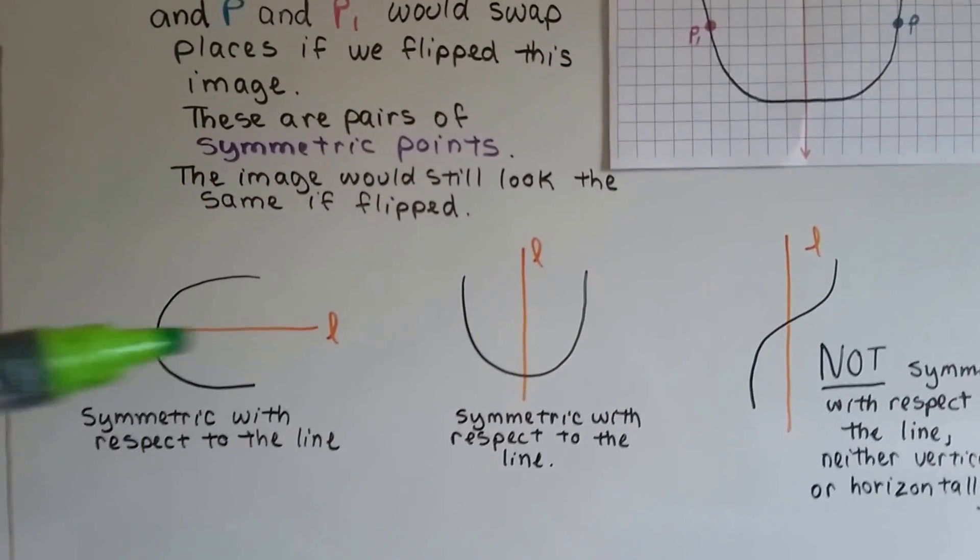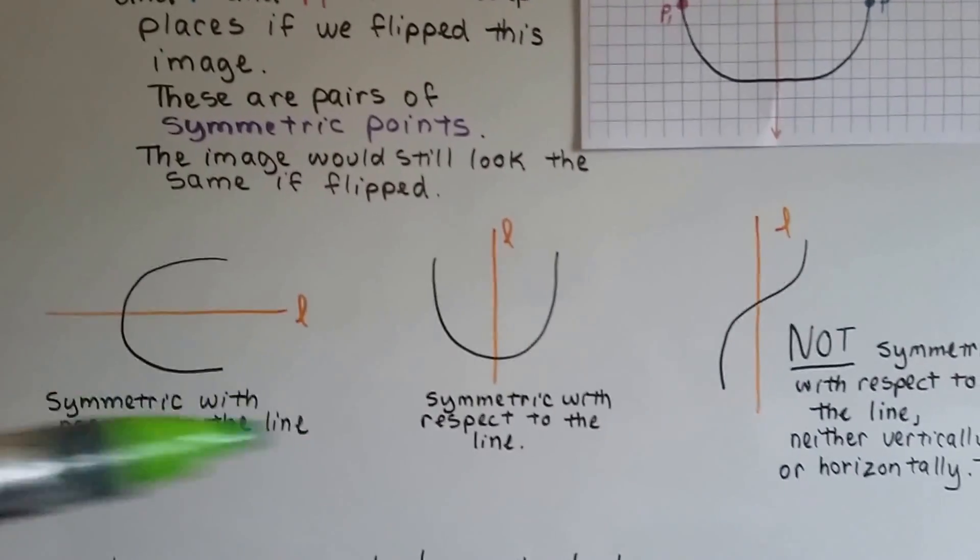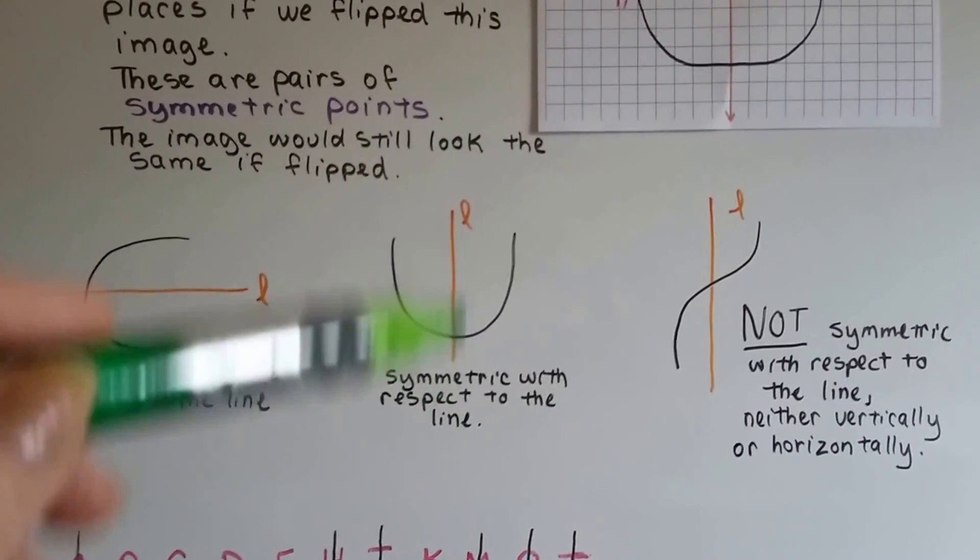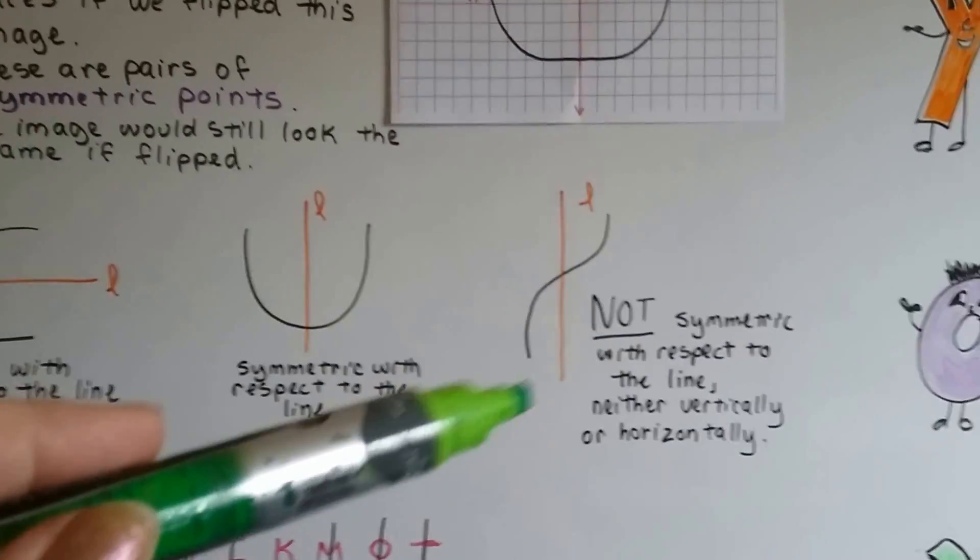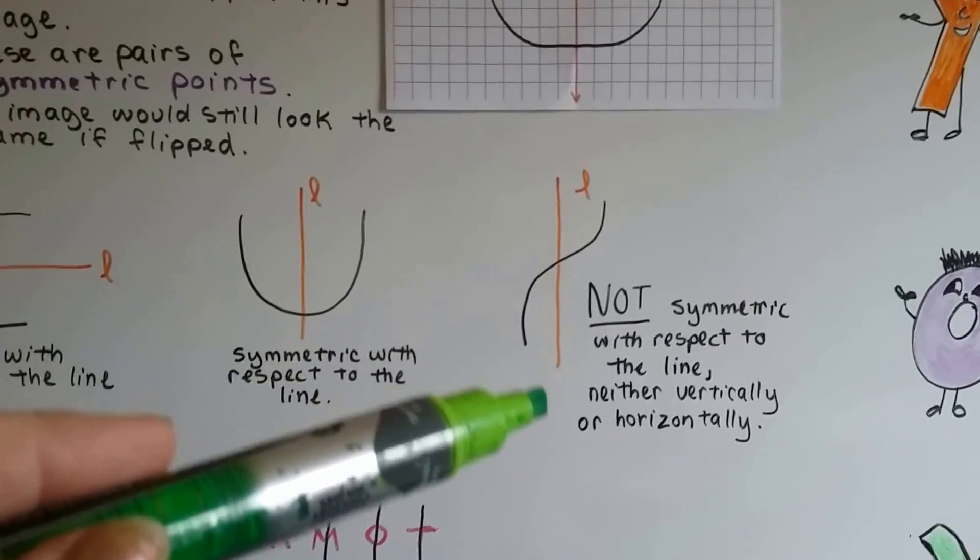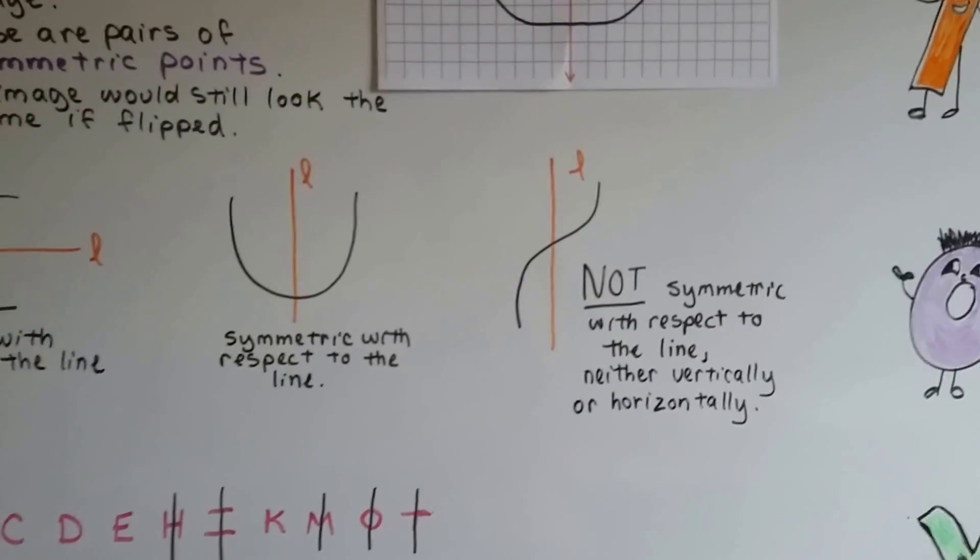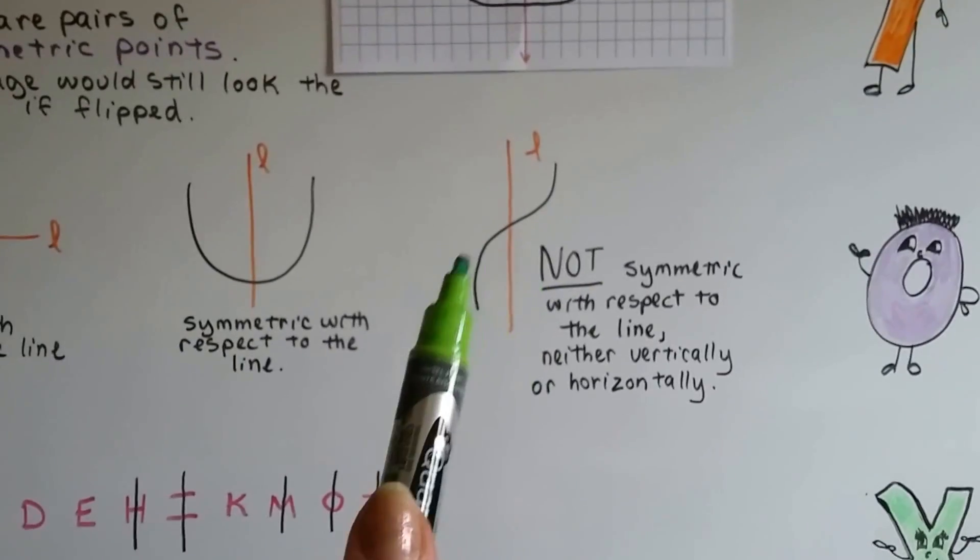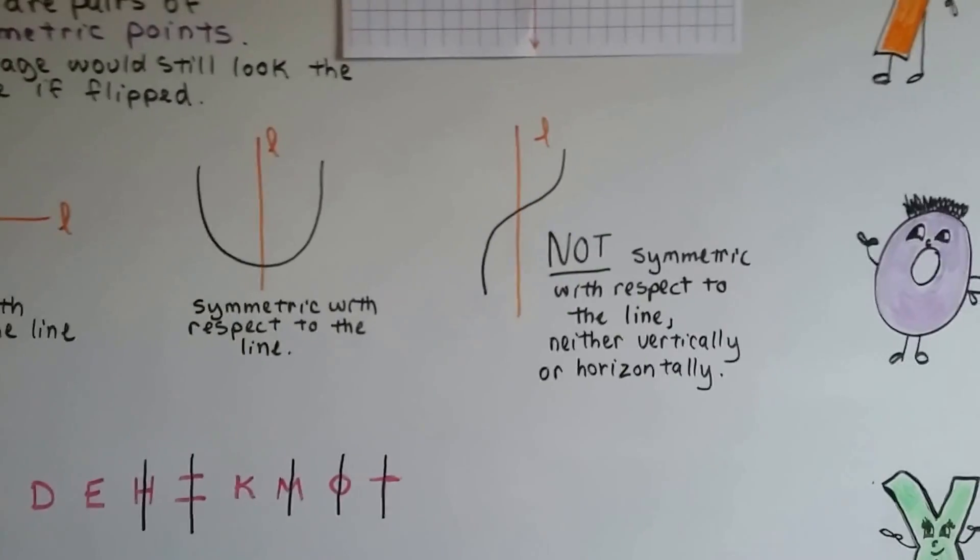This one is symmetric with respect to this horizontal line. This curve is symmetric with respect to this vertical line. But this one's not symmetric with respect to a line at all, neither vertically nor horizontally. If we flipped it over, it wouldn't be the same image. This piece would be down here, it wouldn't be up there, right?